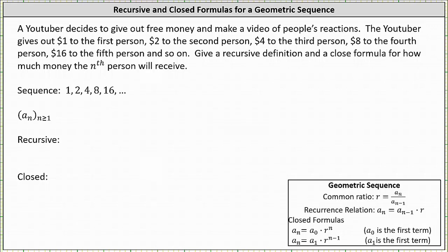A YouTuber decides to give out free money and make a video of people's reactions. The YouTuber gives out $1 to the first person, $2 to the second person, $4 to the third person, $8 to the fourth person, $16 to the fifth person, and so on.